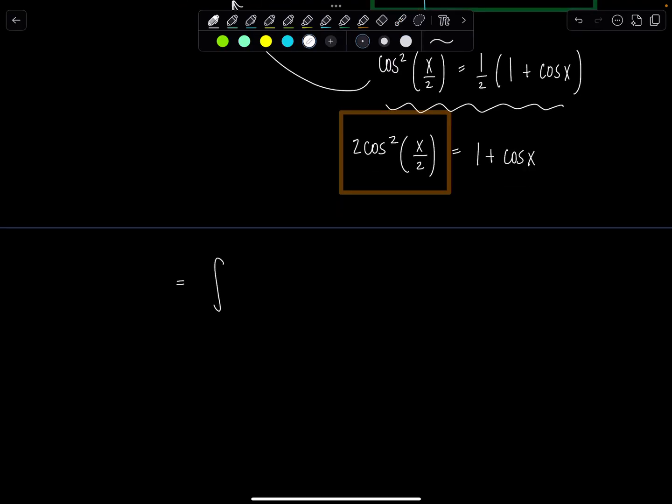So now we have the integral from π/3 to π/2 of √(2cos²(x/2)) dx. All right. Now let's split things up because we have a constant underneath the radical as well. I'm going to write this as √2 times √(cos²(x/2)) dx.